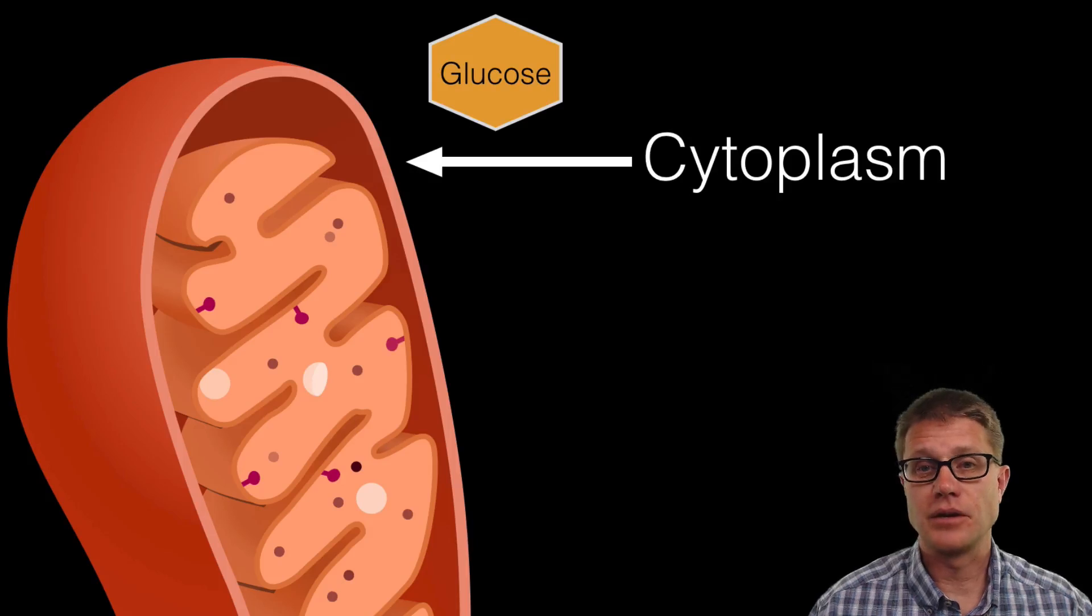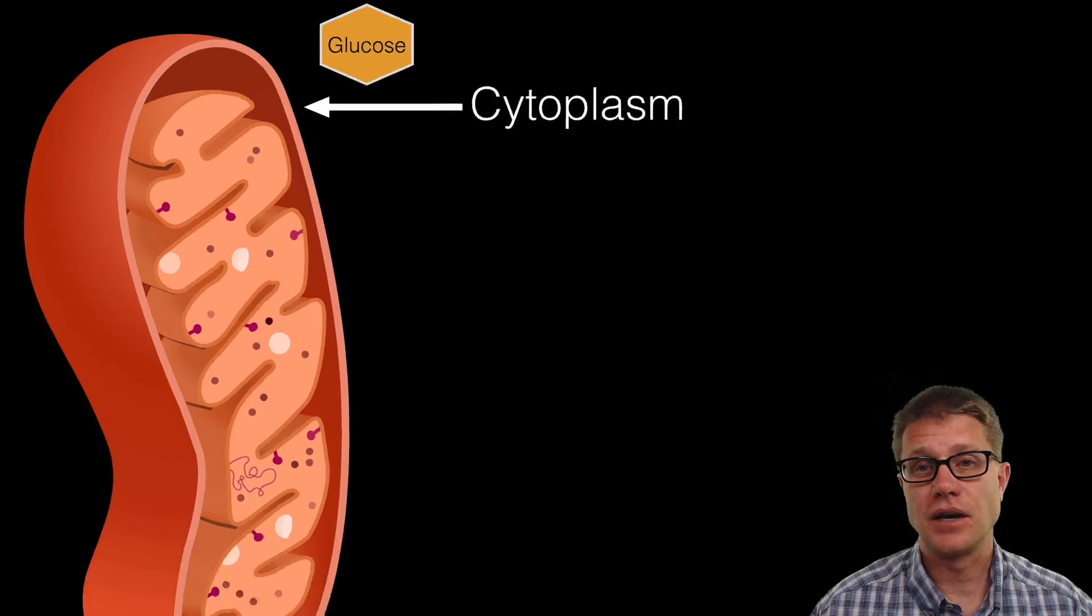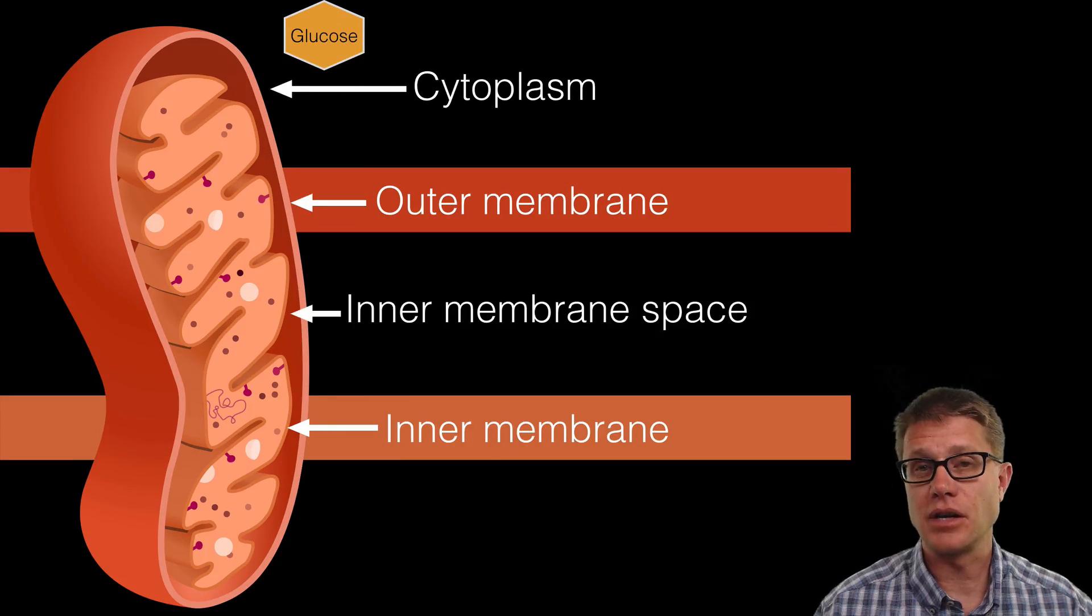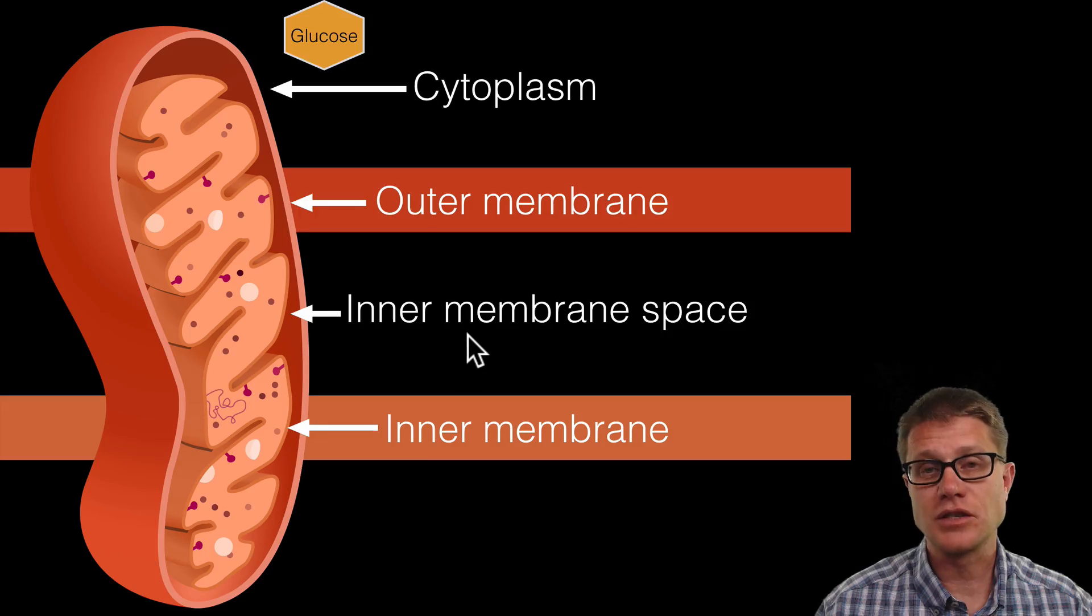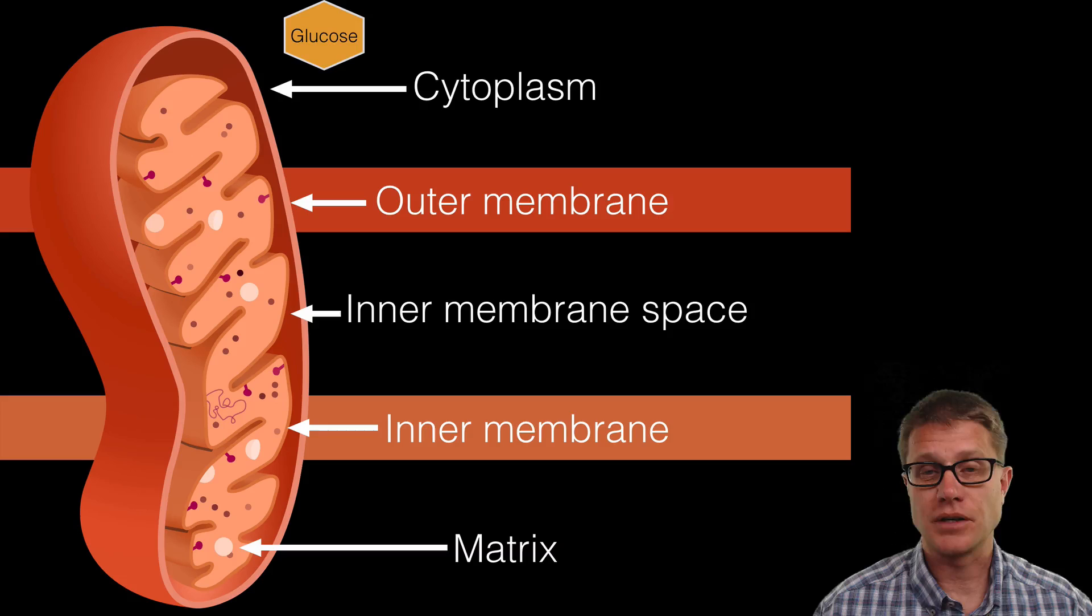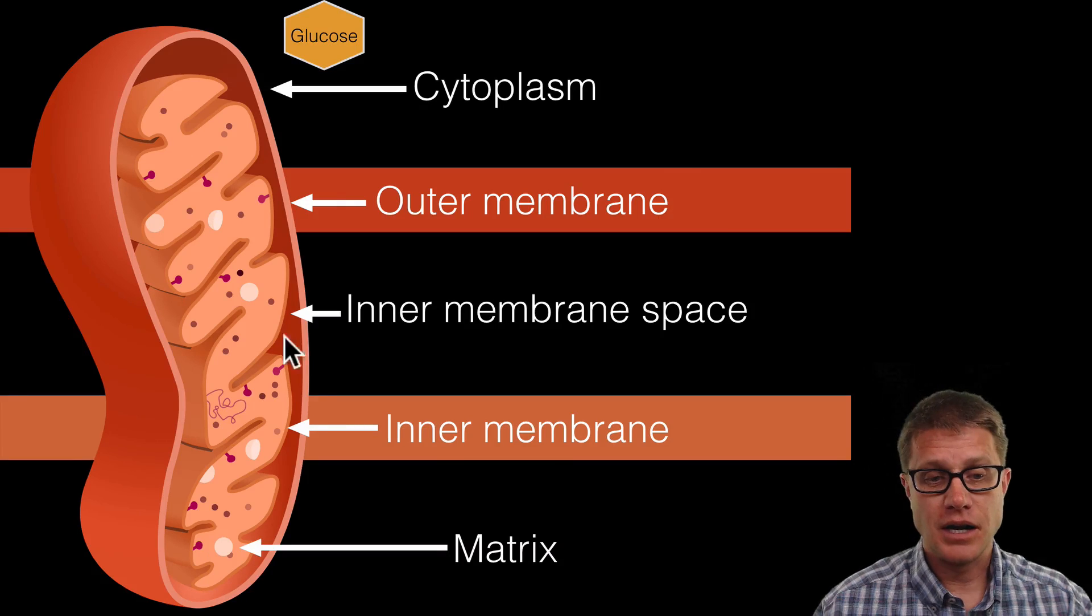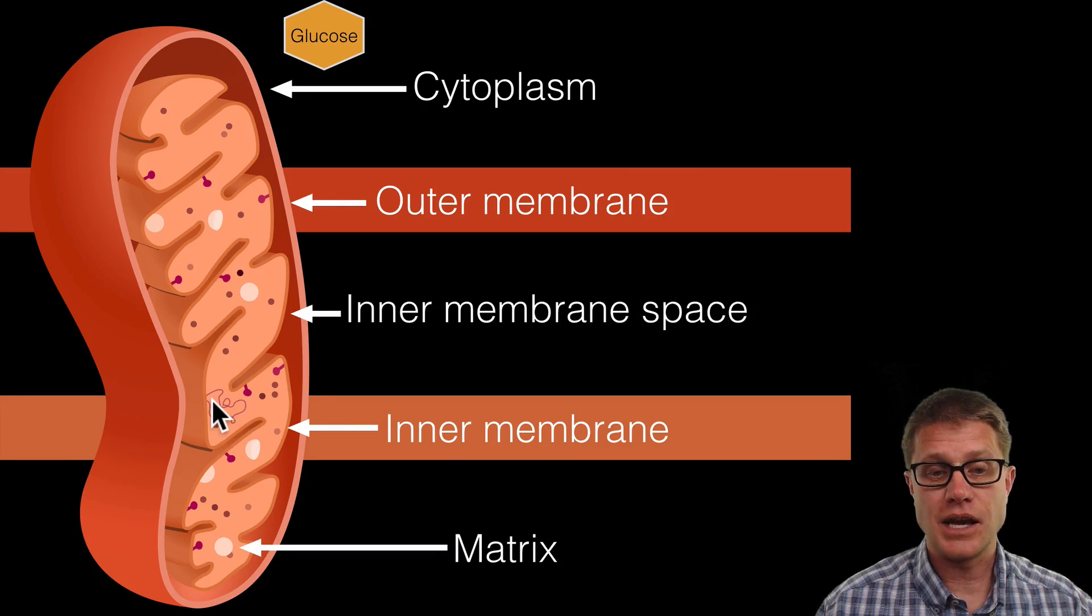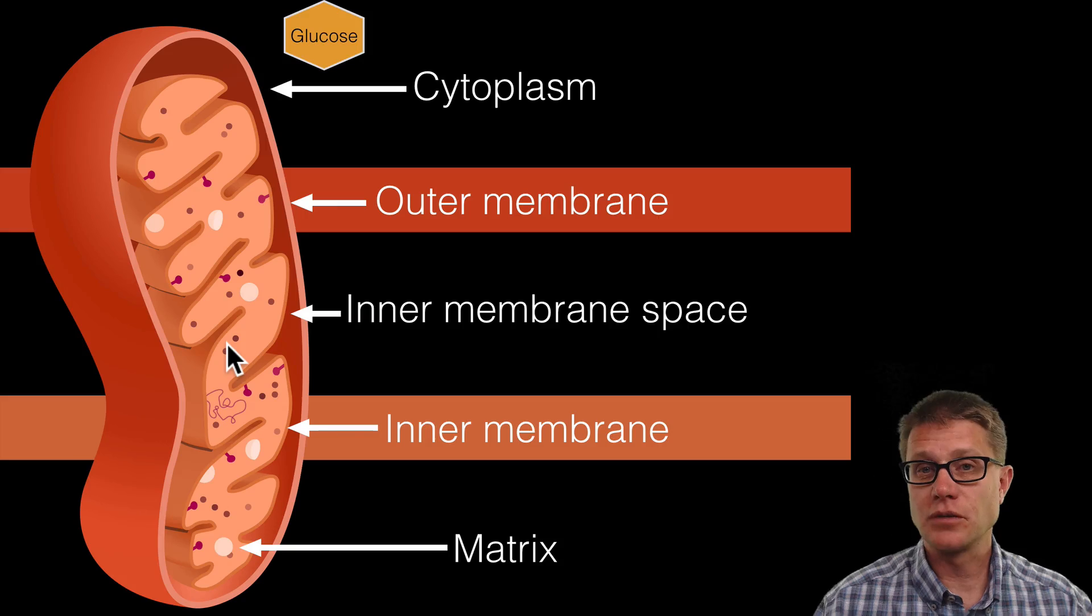So the glucose is outside the mitochondria in the cytoplasm or inside the cell itself. We have got two membranes, an outer and an inner, with an inner membrane space between the two. And then if we go all the way to the inside of the mitochondria, we are going to have the matrix. Now there are some interesting things here. Mitochondria have their own DNA. They have their own ribosomes. And those will come into play a little bit later in the video.